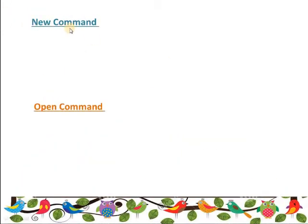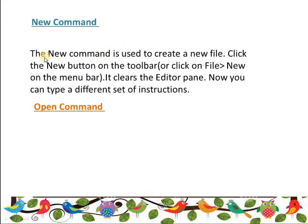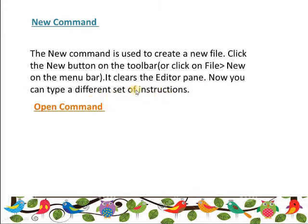The first one is the New button. The new command is used to create a new file. Click the new button on the toolbar, or click on File > New on the menu bar. It clears the editor pane so you can type a different set of instructions. If you have finished your previous work and need a new canvas, click on it and the new page will appear in front of you, ready for a new set of instructions.